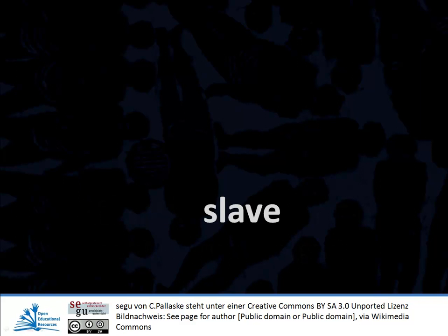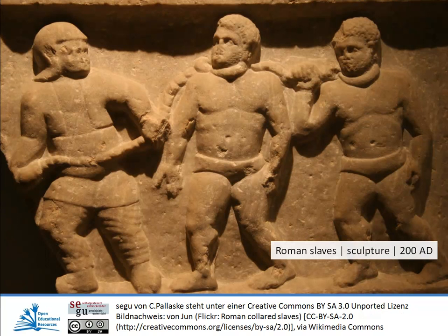What comes into your mind when you think about slaves or slavery? Slavery means that humans are treated as the property of others. Throughout human history, there has always been slavery, as for example in Ancient Rome, where slaves were neither unusual nor forbidden. People could buy or sell slaves, hire them, give them as presents, or inherit them. Throughout history, slavery has taken different forms in different cultures.